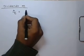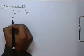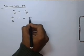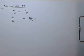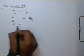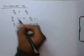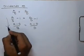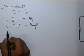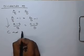Similarly, for the dividendo operation, instead of adding 1 on each side we subtract 1 on each side: a/b - 1 = c/d - 1, which gives us (a - b)/b = (c - d)/d. This operation is called the dividendo operation.